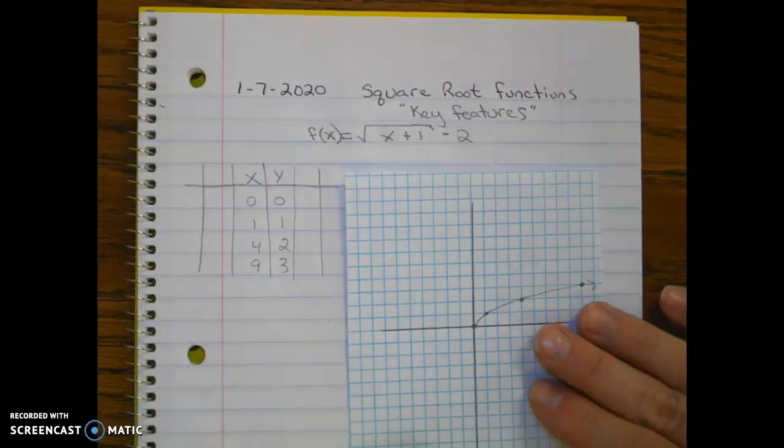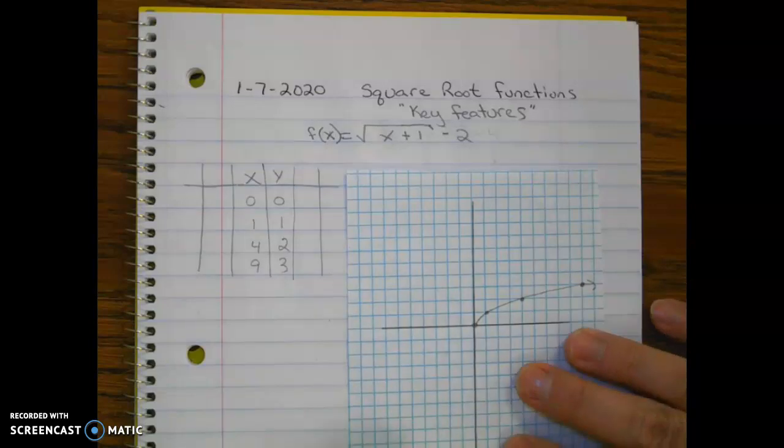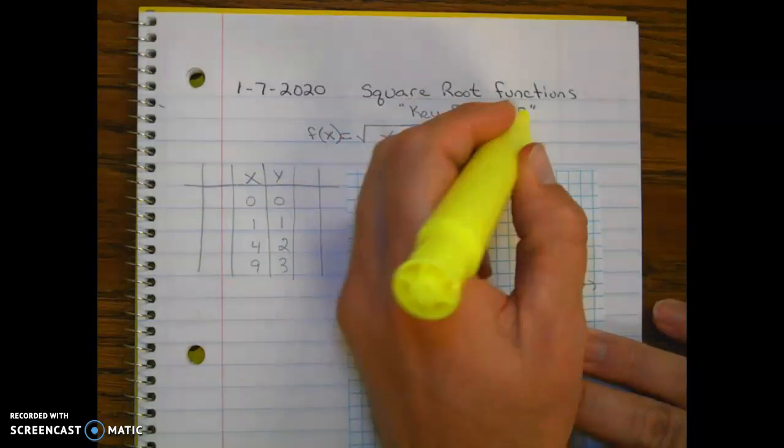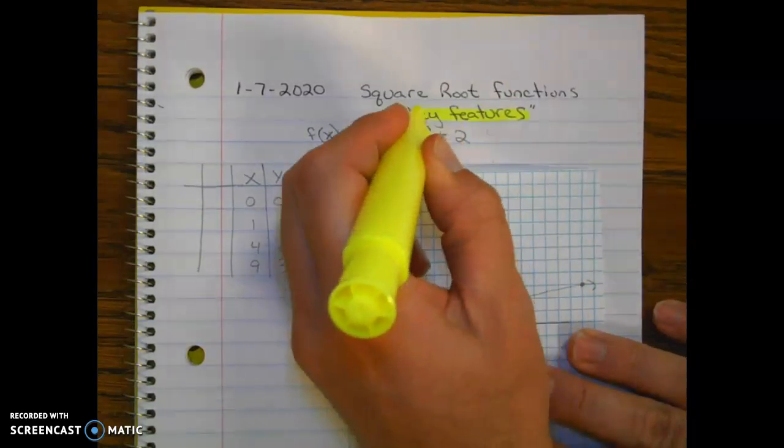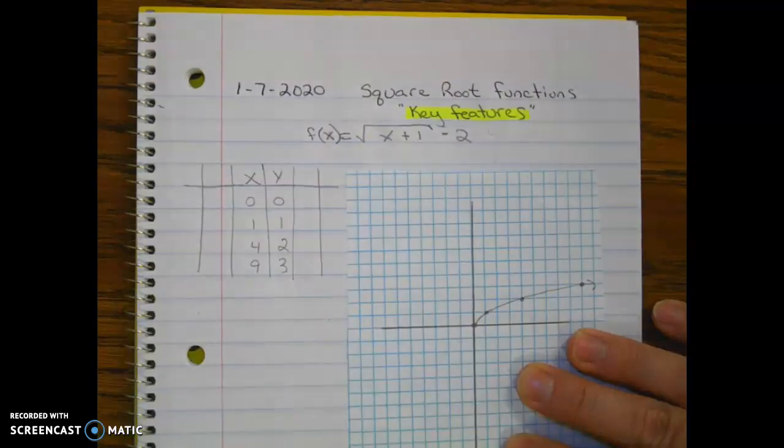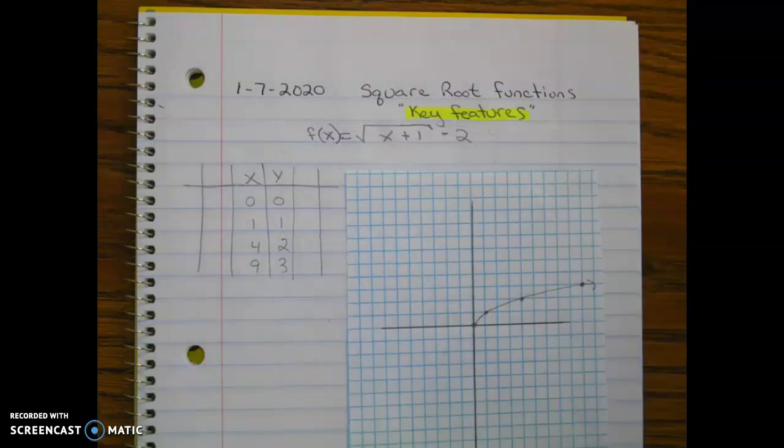All right, so tonight we are going to look at key features of square root functions. We're going to be looking at things like domain and range, x and y intercepts, things like that. So let's take a look.